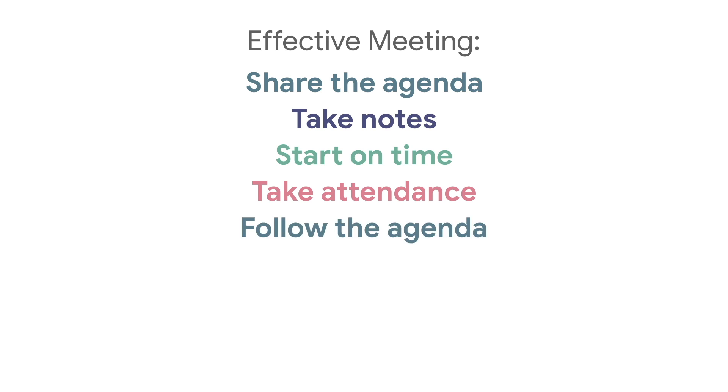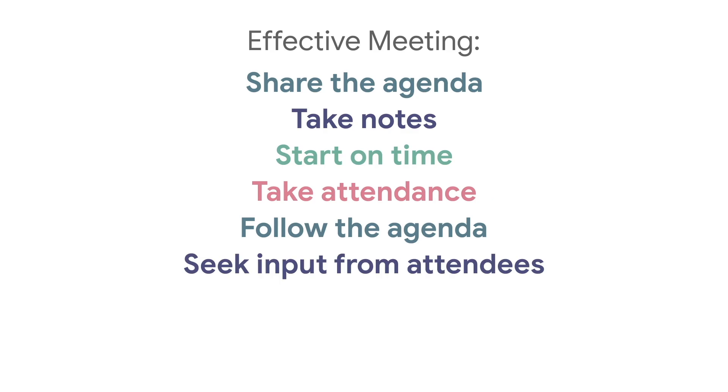Stick to the outline and the schedule. Any items that need more time for discussion should be added to unfinished business for the next meeting. Unfinished business should also be used if you run out of time and are unable to get to a certain item. Encourage honest discussion and an open exchange of ideas. Assign action items and deadlines as new tasks come up so attendees know what they need to do and by when.